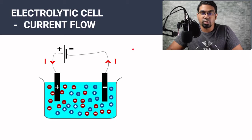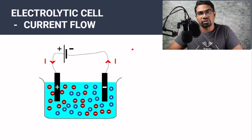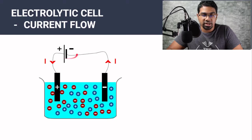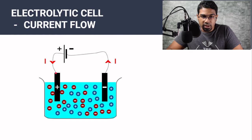In order to properly understand what is going on in an electrolytic cell, we have to study the direction of the electron flow. So first let's look at current flow, because current flow is conventionally defined as flowing from the positive terminal to the negative terminal of the power source. So here is the dry cell. Current is going to flow from the positive terminal here, out here, and then back to the negative terminal. This is the direction of flow of current.